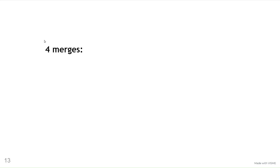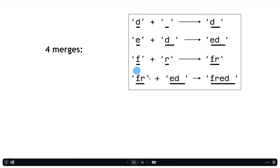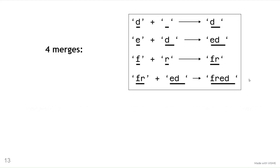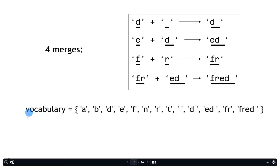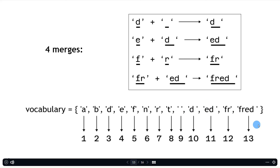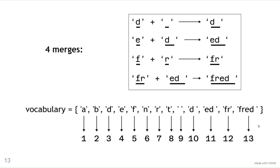If you run this algorithm for four merges — and I highly recommend you try this out — you get these merge rules: rule 1 is D+space → D-space, rule 2 is E+D-space → ED-space, rule 3 is F+R → FR, and rule 4 is FR+ED-space → FRED-space. After doing these merges, we take our new vocabulary with the additional tokens and assign each token a unique integer. Using this vocabulary and these merge rules, we can now tokenize new sentences.